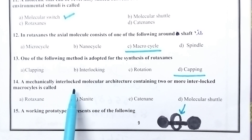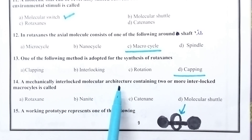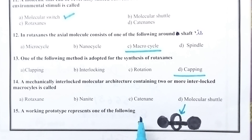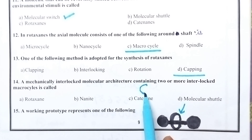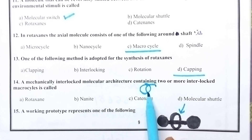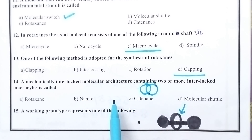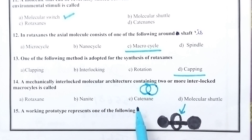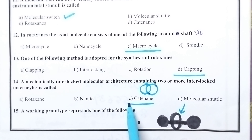A mechanically interlocked molecular architecture containing two or more interlocked macrocycles is called — rotaxins consist of only one macrocycle, but catenanes consist of at least two macrocycles; both are molecular architectures. So the molecular architecture consisting of two or more interlocked macrocycles can be called as catenanes.